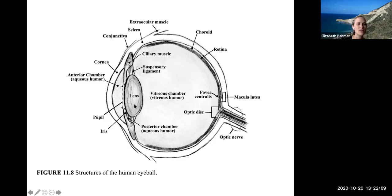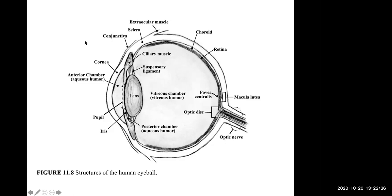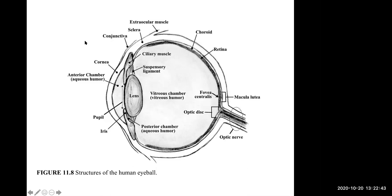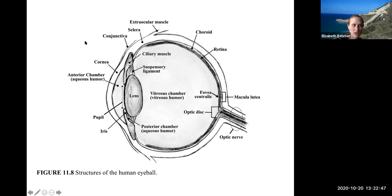These slides are not in the manual. I put them on a separate file in Canvas, so you have to download the PowerPoint file from Canvas. They're in the lecture PowerPoints. The ciliary muscle is connected to suspensory ligaments, and this just controls the shape of the lens.